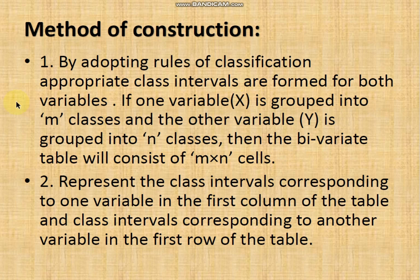If variable x is classified into m classes — divided into equal sub-ranges called class intervals — and variable y is also divided into n class intervals, then the bivariate table consists of m × n cells. The two variables with their respective class intervals are plotted against each other to show how they are related.